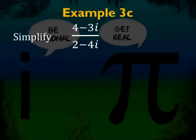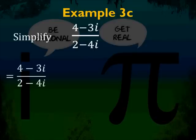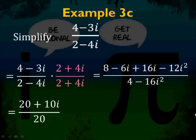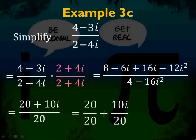Example 3c: 4 minus 3i over 2 minus 4i. Multiply top and bottom by the conjugate 2 plus 4i. In the numerator, applying FOIL gives 8 minus 6i plus 16i minus 12i squared. The denominator is 2 squared plus 4 squared, which equals 20. Negative 12i squared becomes positive 12, which adds to 8 to give 20. Combining the imaginary parts gives 10i. So you get 20 plus 10i over 20, and after reducing, the answer is 1 plus one-half i.